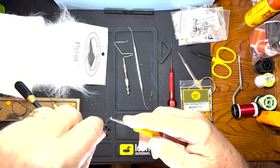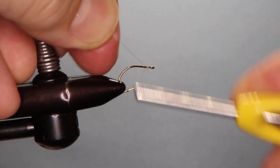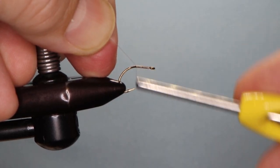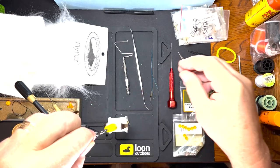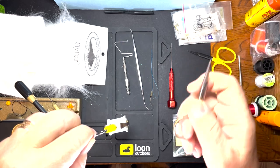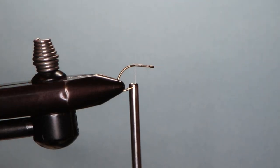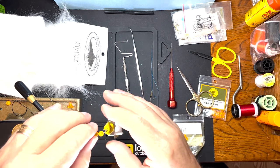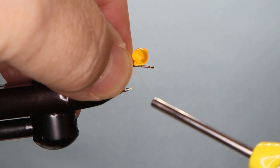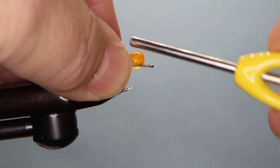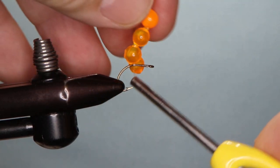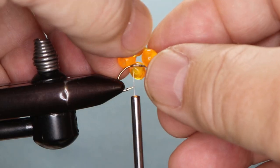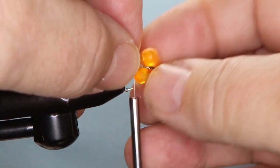Just start the thread down the hook shank, trim it, and grab the egg chain. We're going to tie in the first one with about three or four wraps, and then fold it over and get another one in.